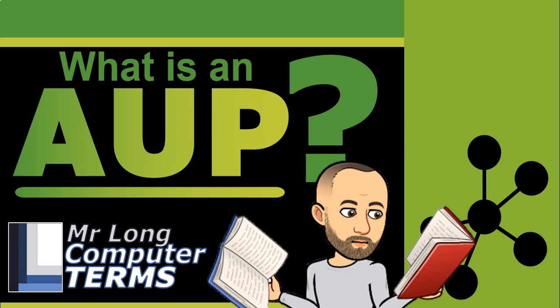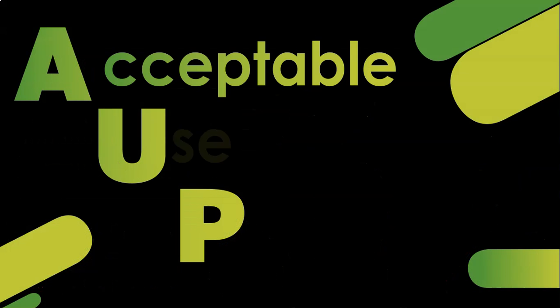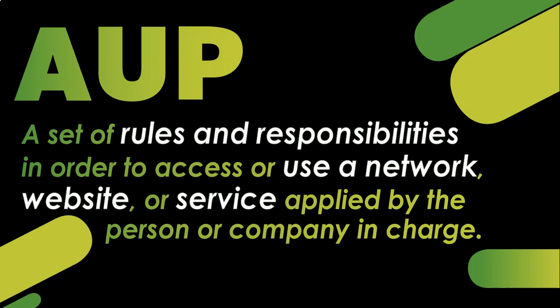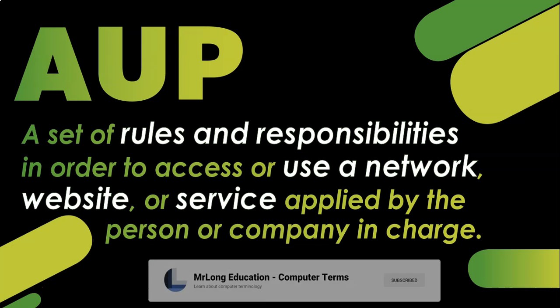What is an AUP? AUP stands for Acceptable Use Policy. An Acceptable Use Policy is a set of rules and responsibilities in order to access or use a network, a website, or a service. It's normally applied by a person or a company who owns or is in charge of that particular network, website, or service.